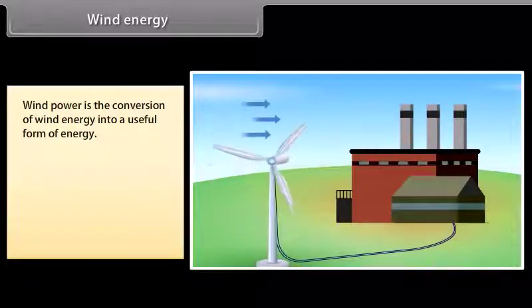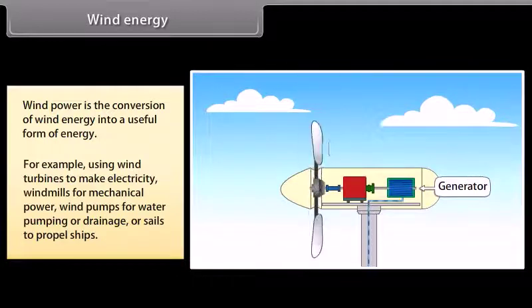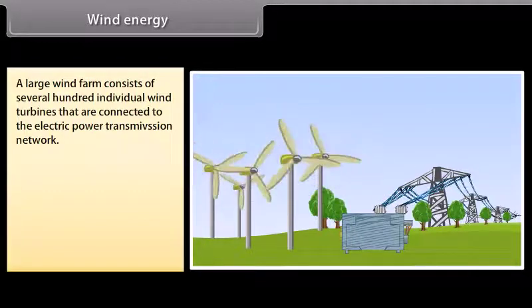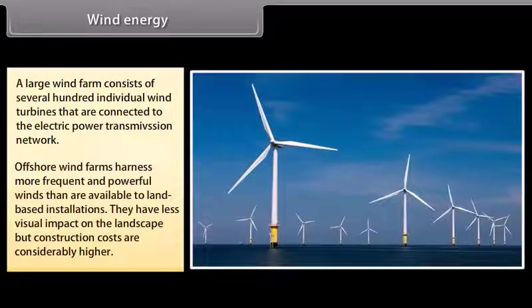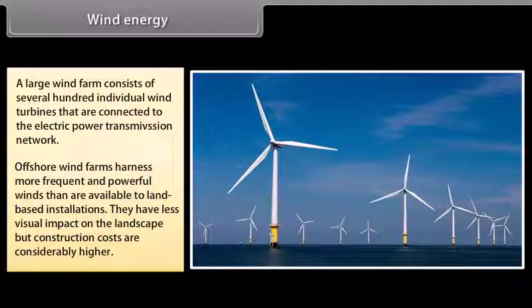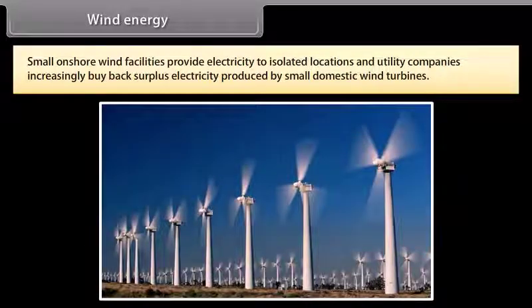Wind energy. Wind power is the conversion of wind energy into a useful form of energy using wind turbines to make electricity, windmills for mechanical power, wind pumps for water pumping or drainage, or sails to propel ships. A large wind farm consists of several hundred individual wind turbines that are connected to the electric power transmission network. Offshore wind farms harness more frequent and powerful winds than are available to land-based installations. They have less visual impact on the landscape, but construction costs are considerably higher. Small onshore wind facilities provide electricity to isolated locations, and utility companies increasingly buy back surplus electricity produced by small domestic wind turbines.